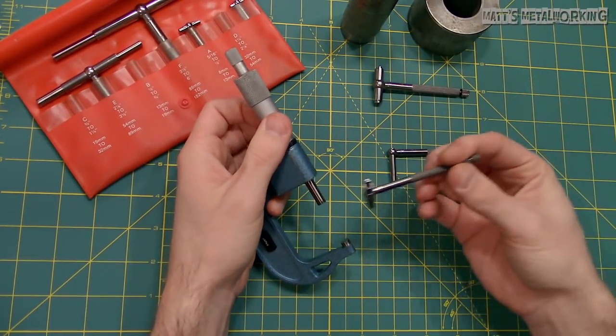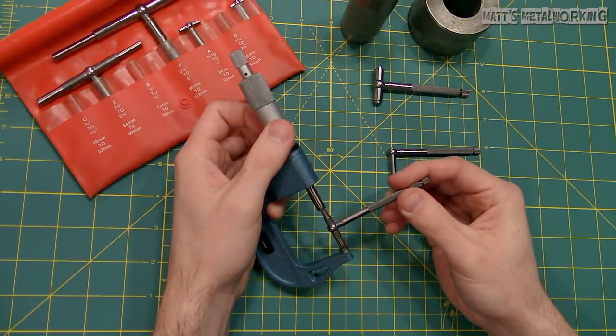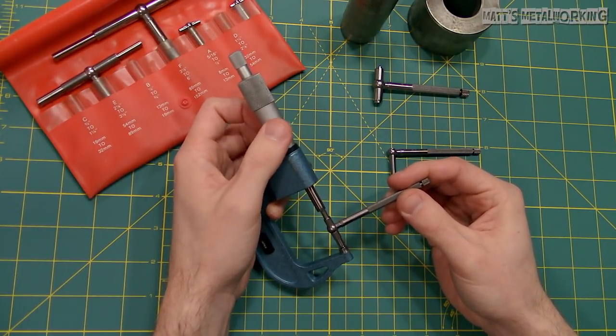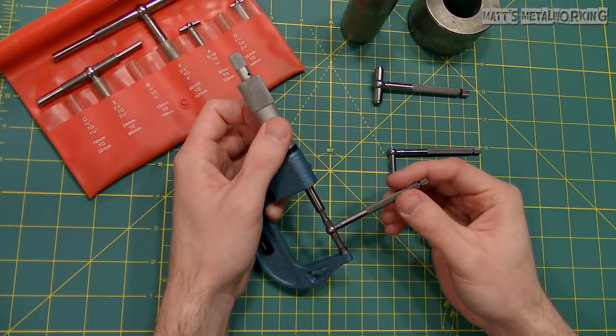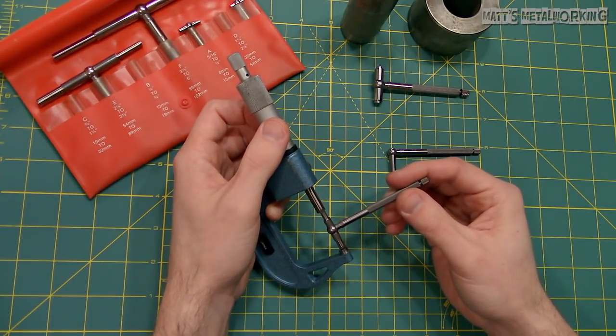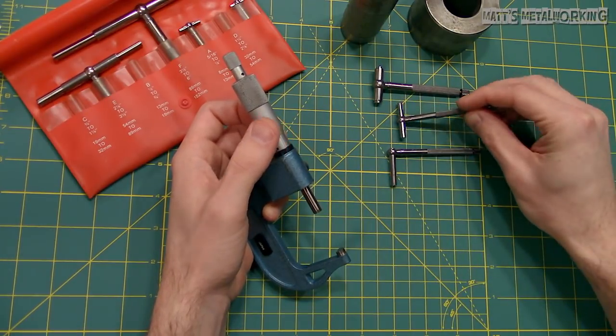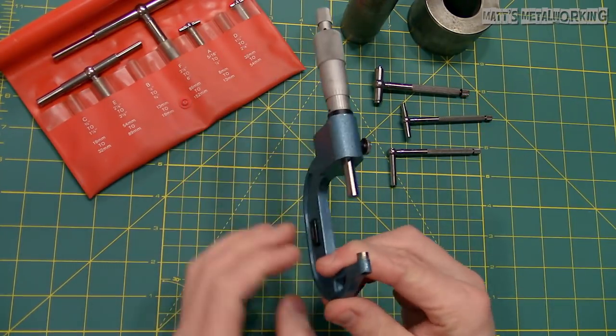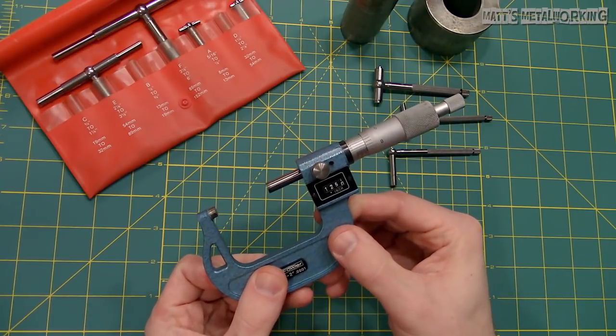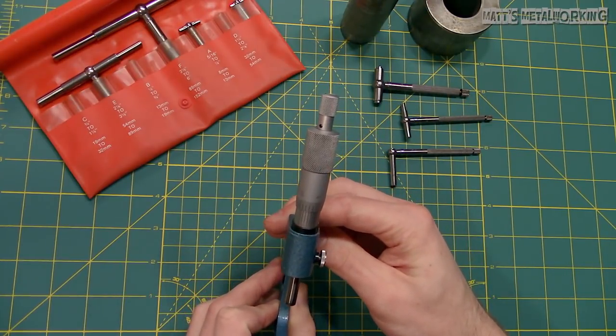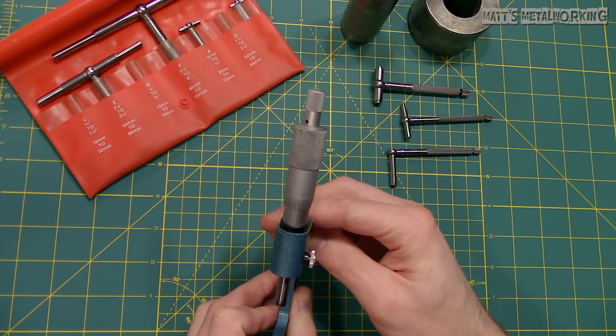Now for the second bore gauge, this does take some practice and feel. There should be a light drag when sliding the gauge in the micrometer. Do not use a ratchet as this can cause too much pressure and push the pistons on the gauge inward giving you an inaccurate reading.